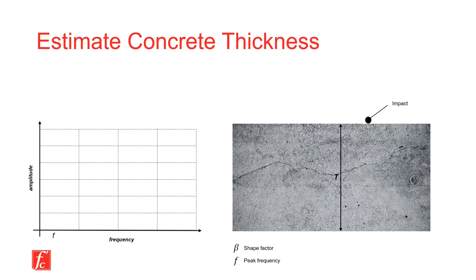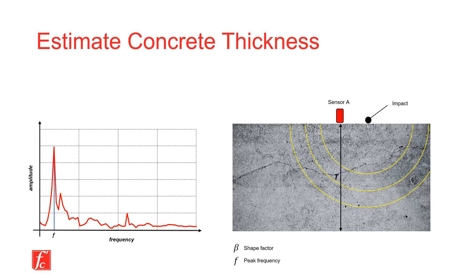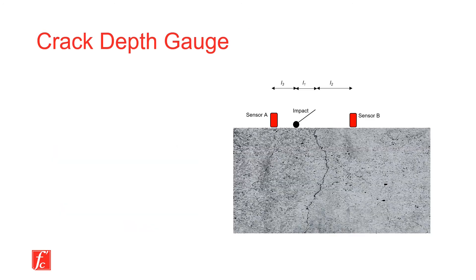To estimate the overall thickness of the concrete element, one motion transducer is placed on one side of the concrete element. Next, a steel ball impactor is used to strike the concrete surface. The waveform is then studied in the frequency domain, and the peak frequency associated with back-end reflection is identified. Finally, a mathematical formula is used to estimate the concrete thickness. Depending on the geometry of the element, a shape correction factor should be applied to the measurements.